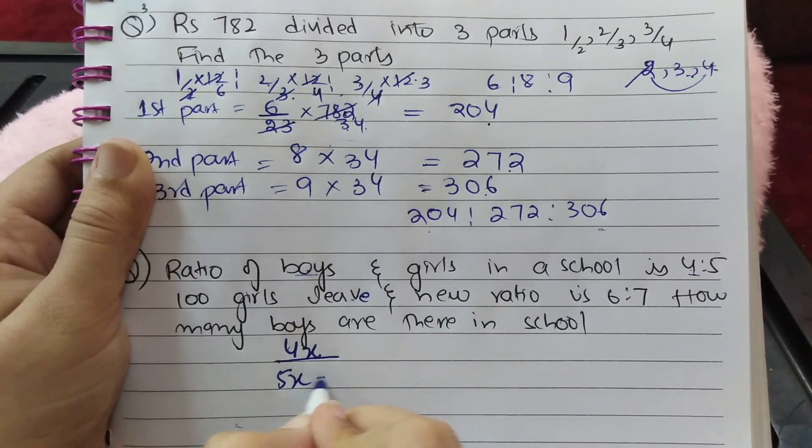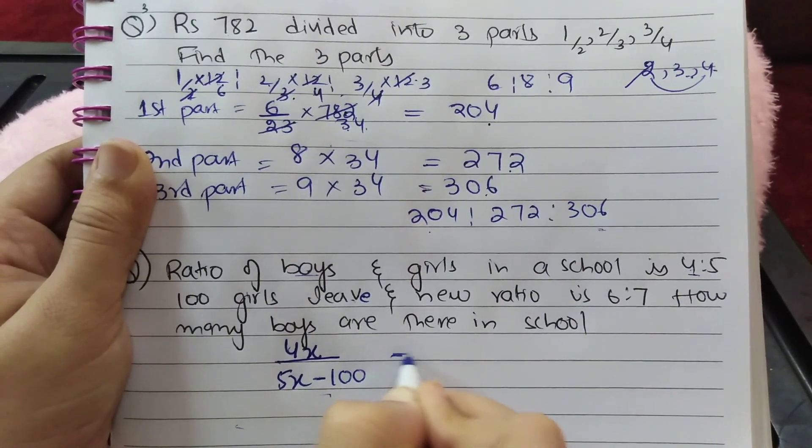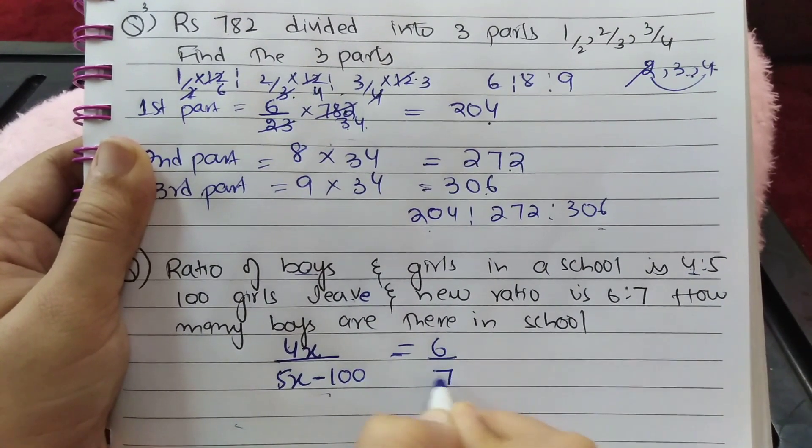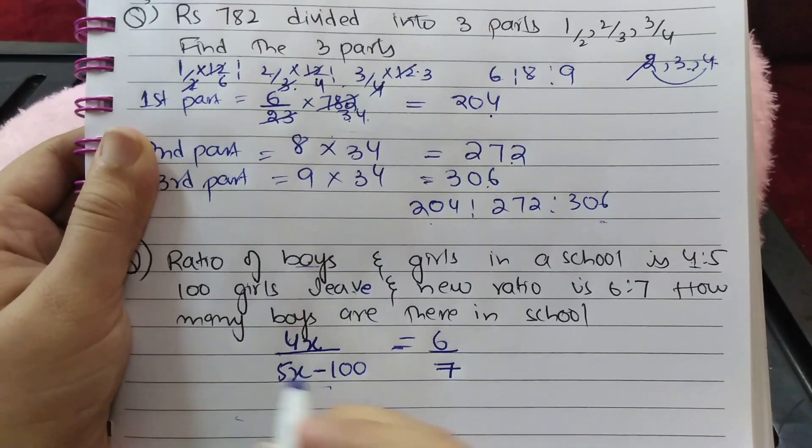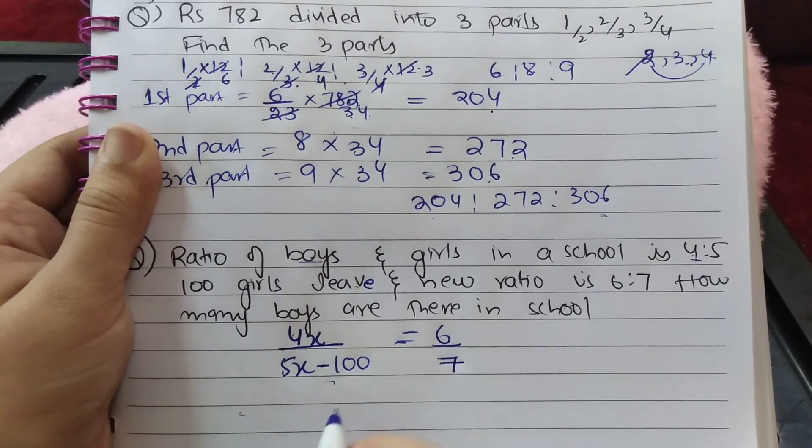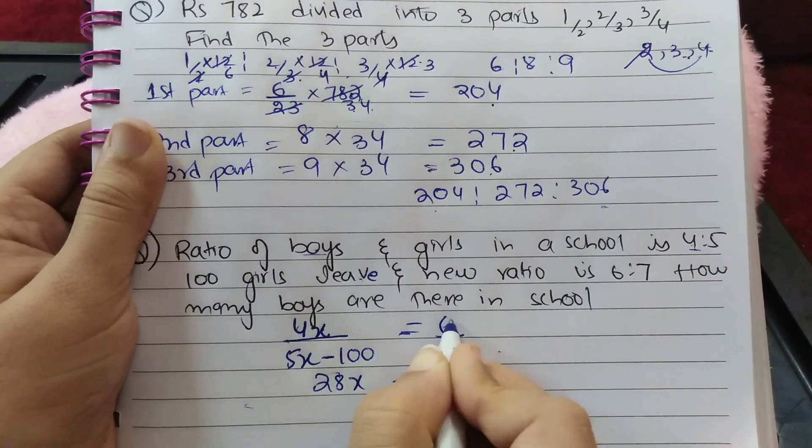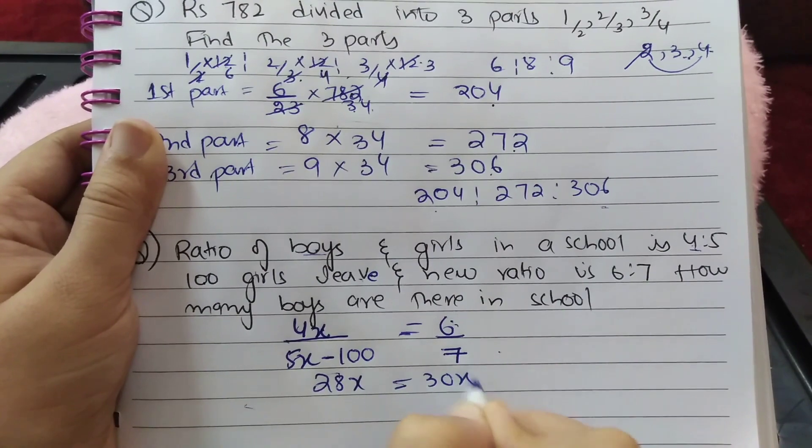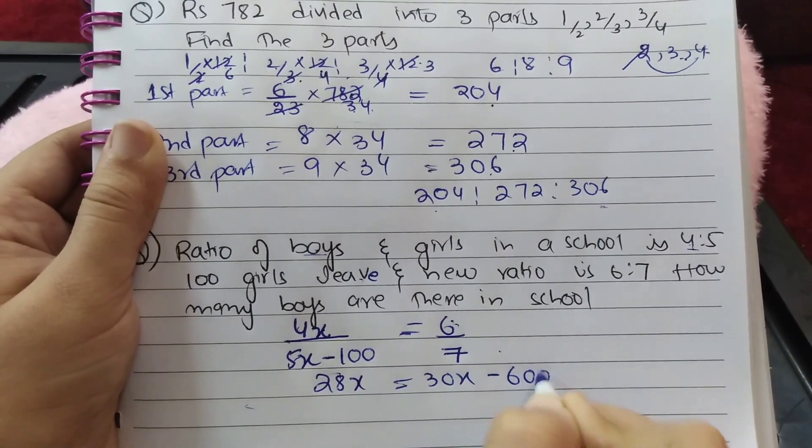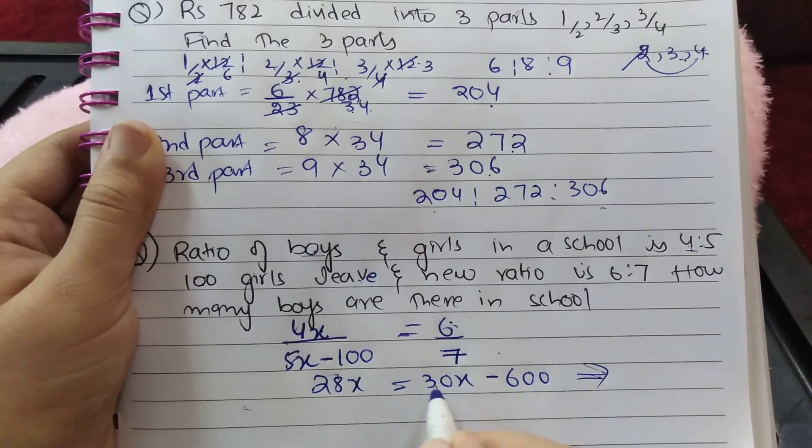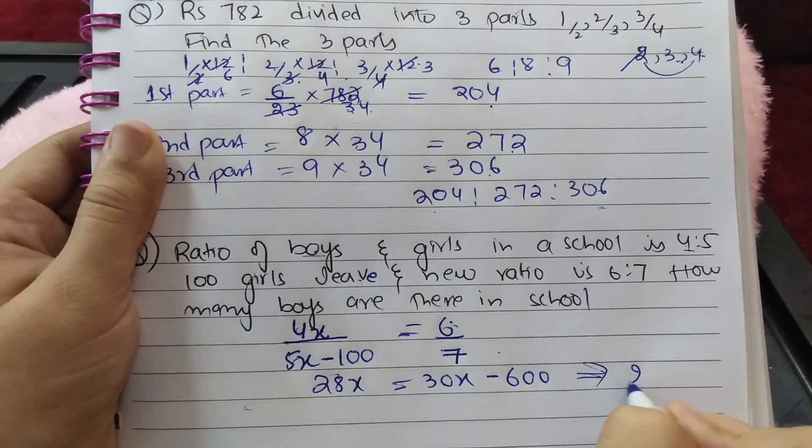100 girls leave, so subtract 100. The new ratio is 6:7. Cross multiply: 4 × 7 = 28x, which equals (5x - 100) × 6 = 30x - 600. Rearranging: 30x - 28x = 2x.